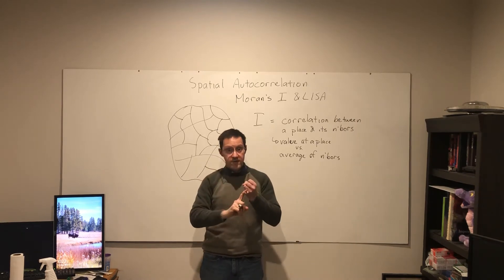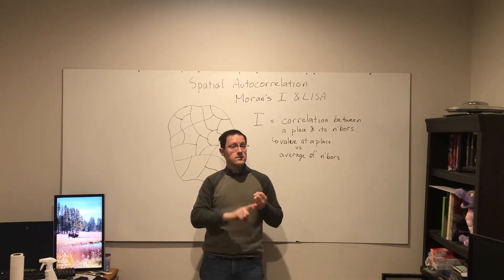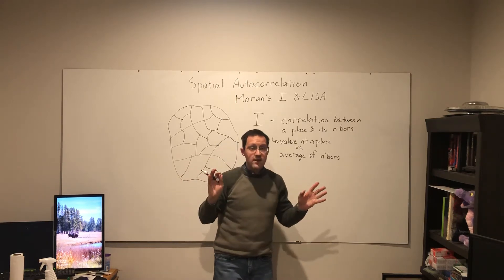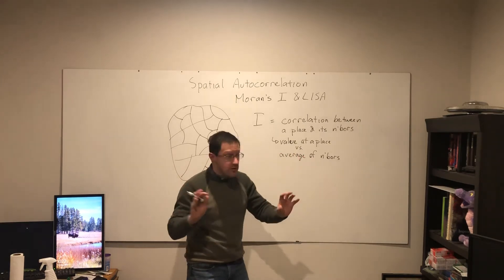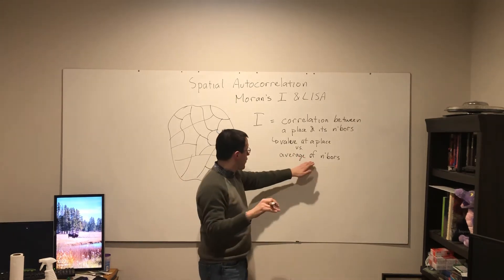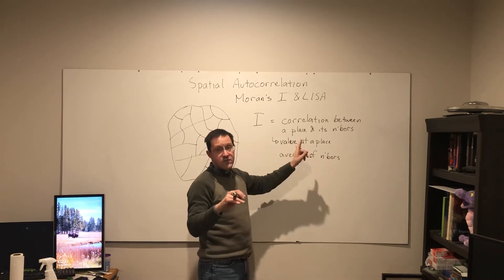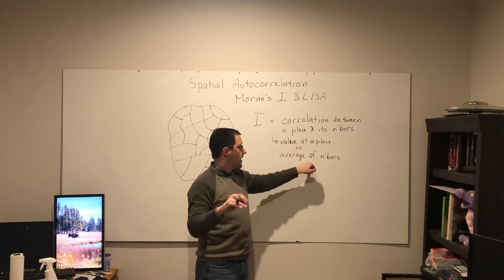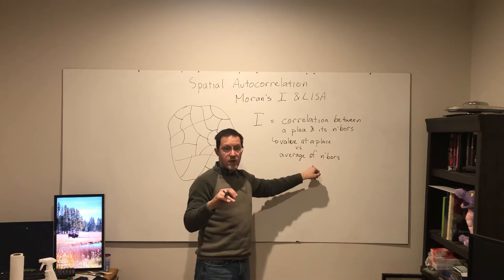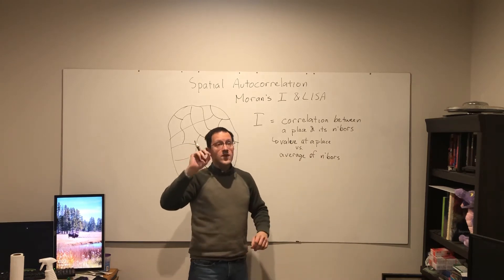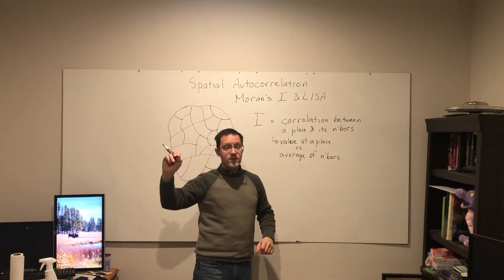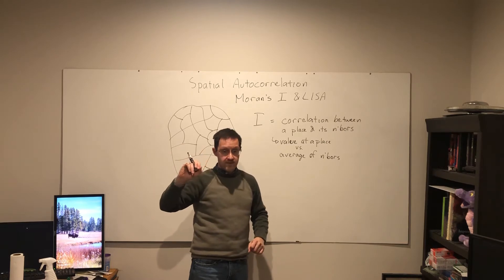Whether that is a contiguity, distance threshold, or nearest neighbor — however we have defined neighbor — Moran's I is the correlation between the value in a place and the average of its neighbors, across every single unit within the study area, across every single place.